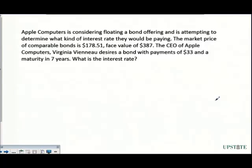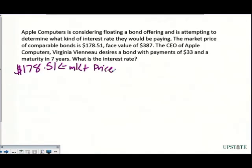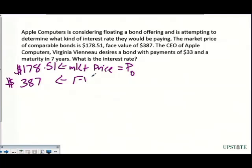The next question involves a bond offering and determining the interest rate. Comparable bonds are priced at $178.51 — that's the market price, our P0. We have a face value of $387, which is our future value. Remember face value, maturity value, principal value, and par value all mean the same thing — the lump sum received at the end.